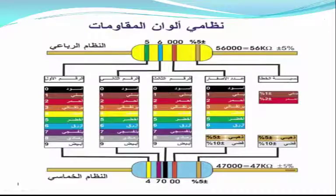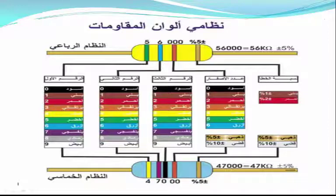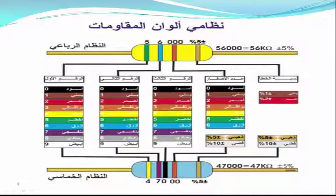يمكن قراءة قيمة المقاومة من خلال الألوان على جسمها. على سبيل المثال: الشريط الأول bright (1)، الثاني orange، الثالث orange، والرابع يُمثّل المضاعف. إذا كان الناتج 5600 أوم، يمكن تحويله إلى كيلو أوم فيصبح 5.6 kΩ.